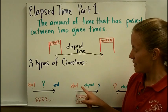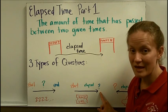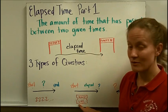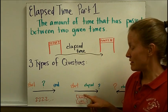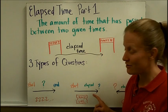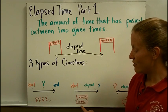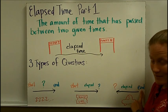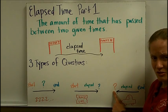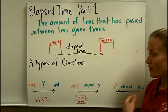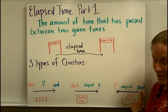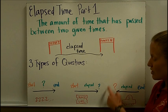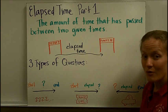Some problems give you a start time and an elapsed time, and you have to come up with an end time. In real life, if you know the time that a movie started and you knew it was going to last one hour and 45 minutes, you might want to know what time the movie was going to end by adding on that amount of time. And finally, sometimes you are given an end time and an elapsed time and you have to figure out the start time. If you know what time you need to be somewhere and how many hours and minutes it takes to drive there, figuring out the start time lets you know what time you need to get in the car to be on time.